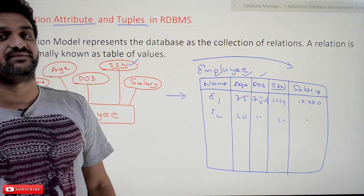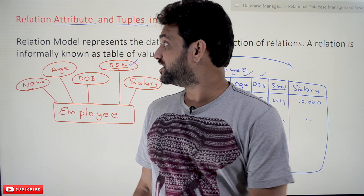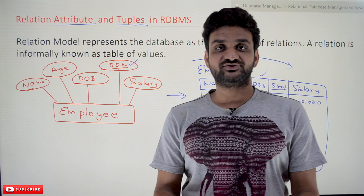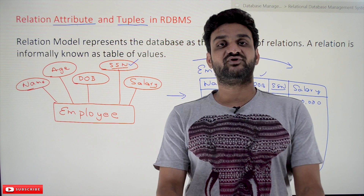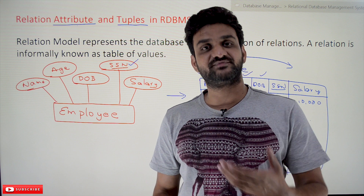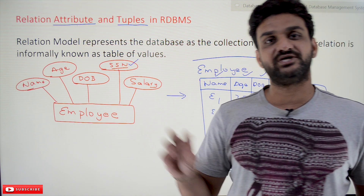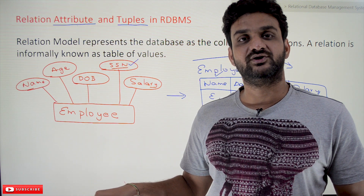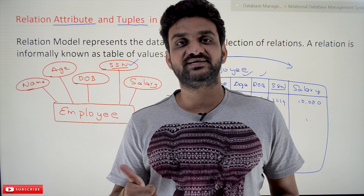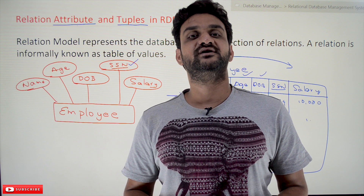So this is all about relation, attribute, and tuples in RDBMS. The relation is what we call a table, each column is a property of the entities, and each row represents an entity in the company database. Hope you got the clarity on this concept. Thanks for watching — if you haven't subscribed to our channel please subscribe and press the bell icon for the latest updates. Post any doubts in the comment section below, give us a like, and please share this video with your friends.